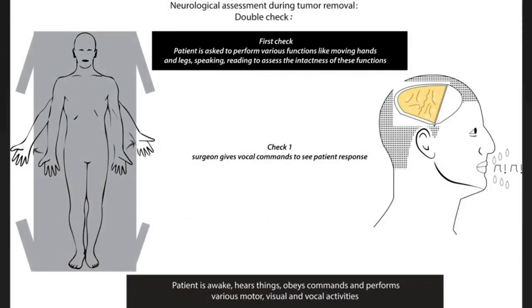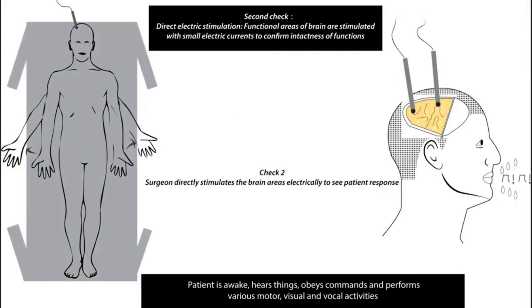The neurological status is doubly checked during tumor removal. In the first check, the patient is asked to perform various functions like moving hands and legs, speaking, and reading to assess the intactness of these functions. In the second check, the surgeon directly stimulates the functional areas with small currents to check the intactness of these areas as tumor resection progresses.